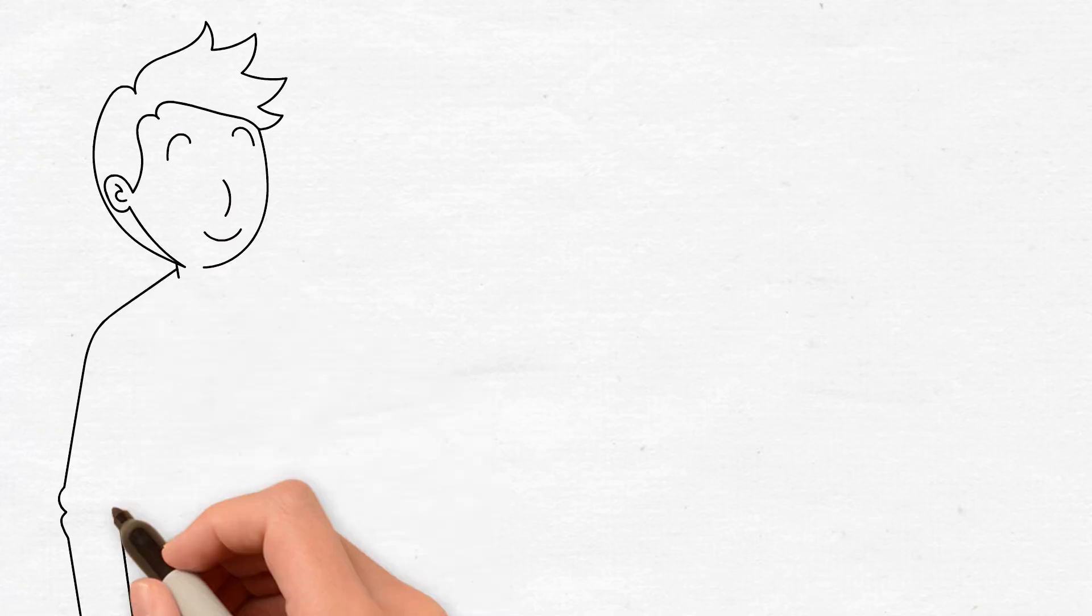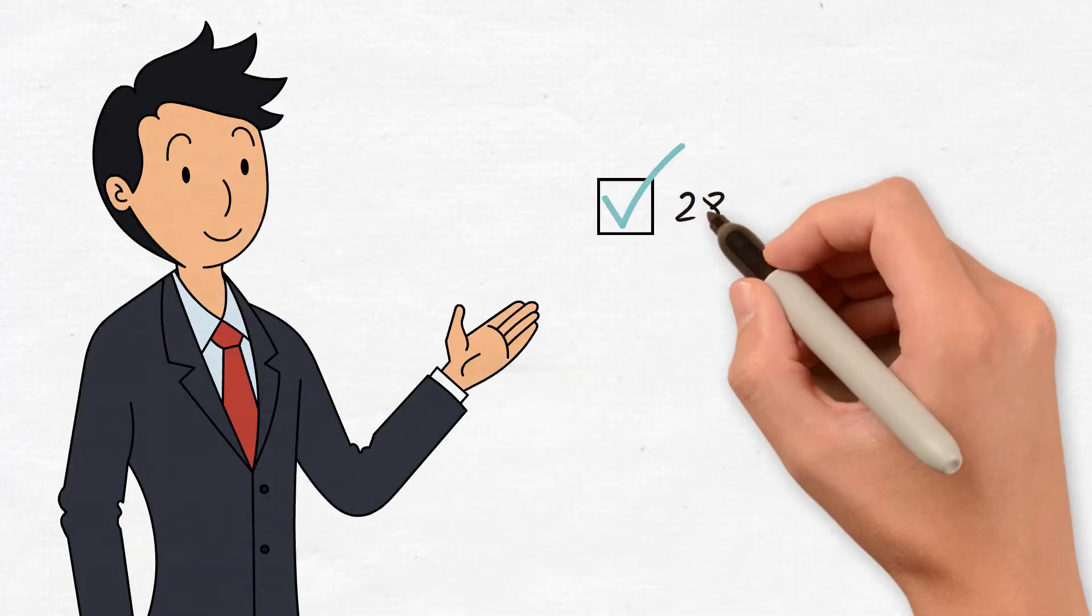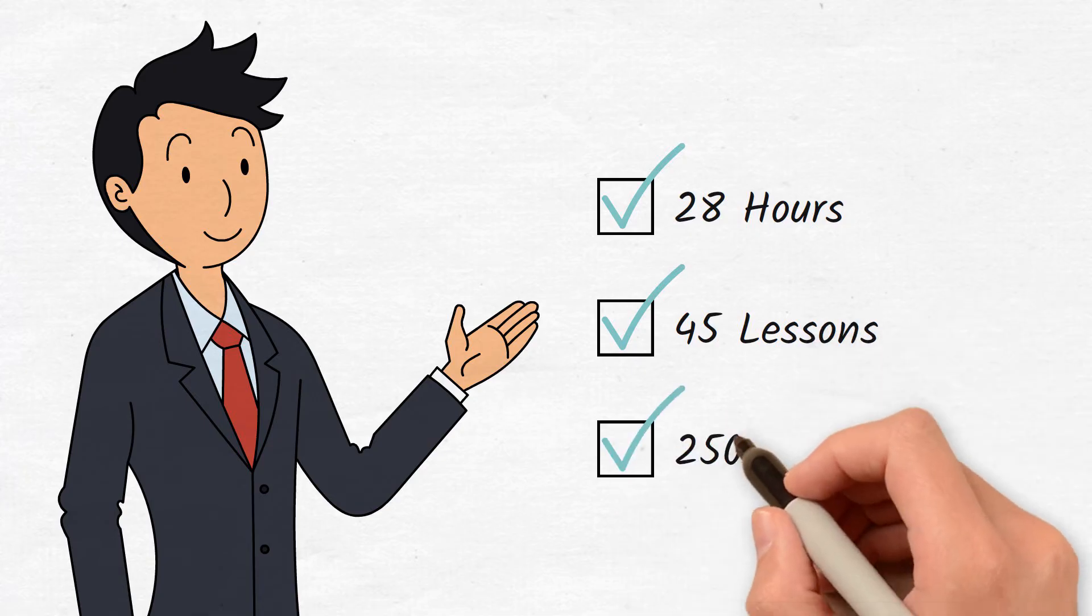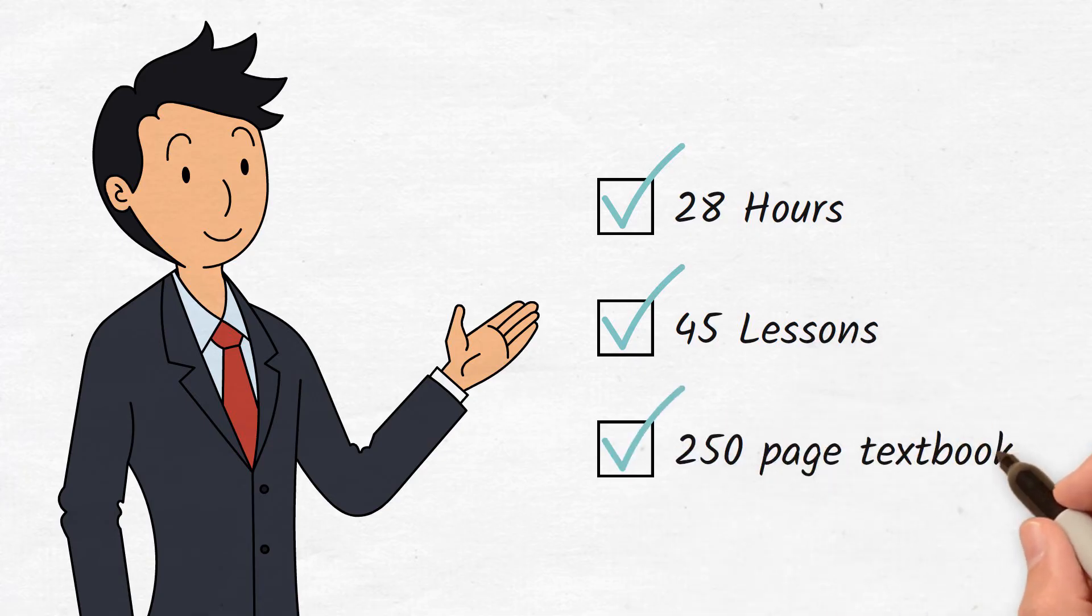Course version 2.0 includes 28 hours of exciting new lectures over 45 lessons and comes with a 250 page hardcover textbook that summarizes the course.